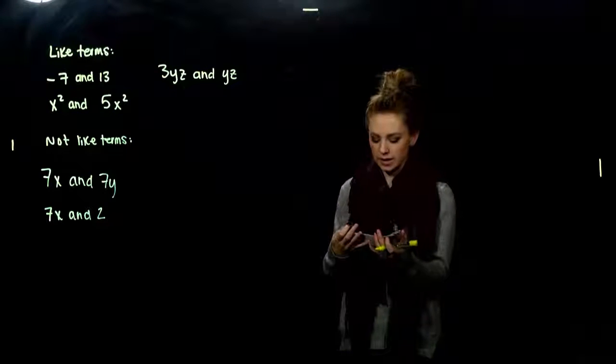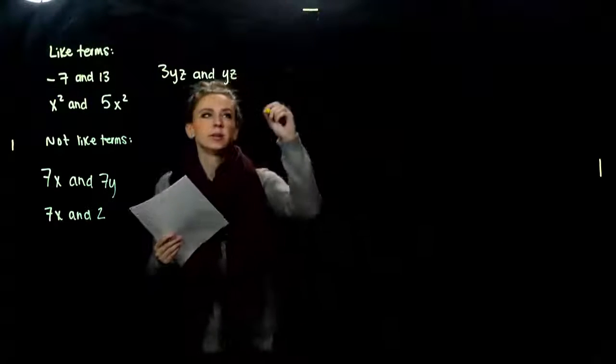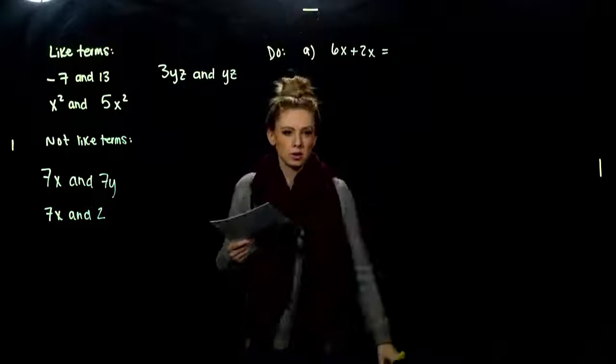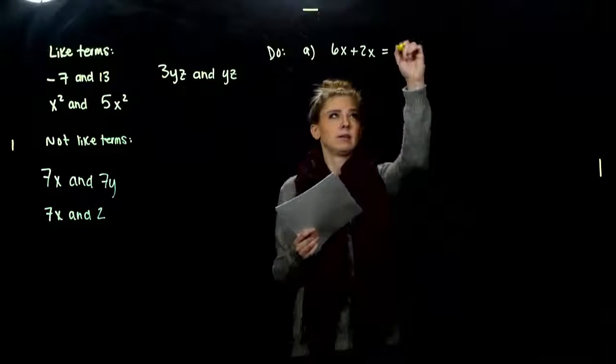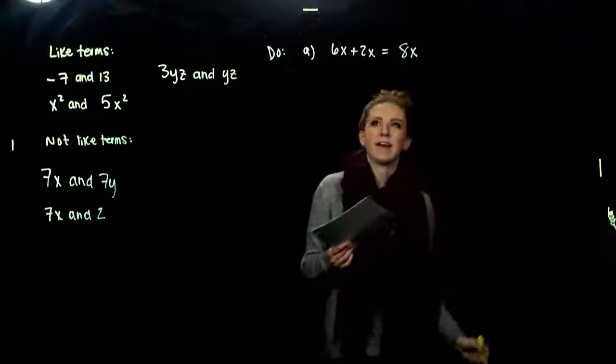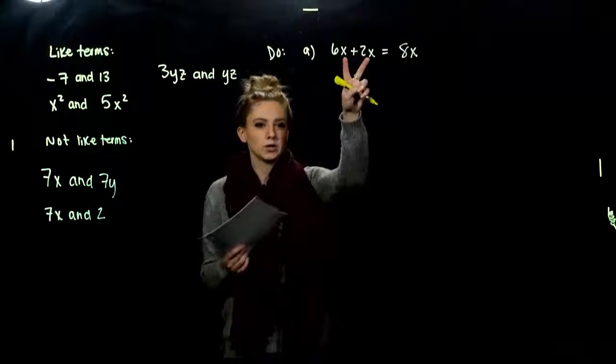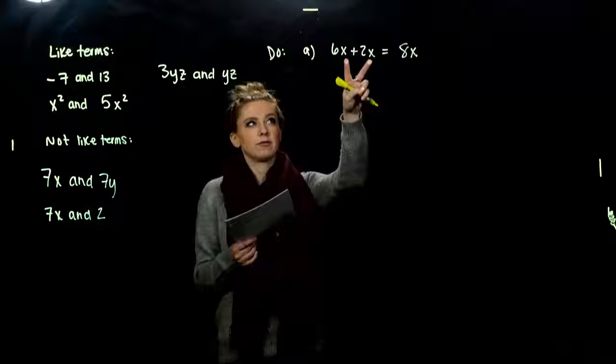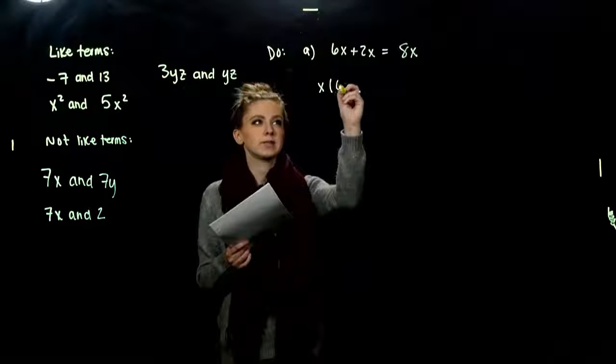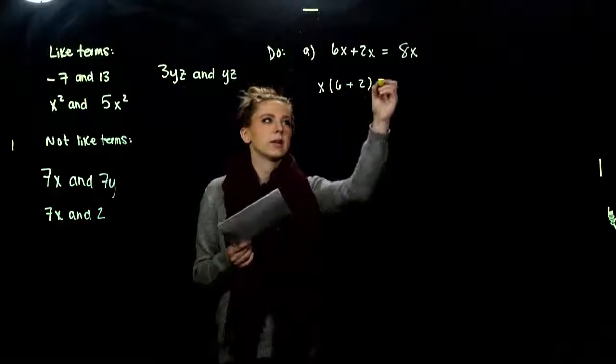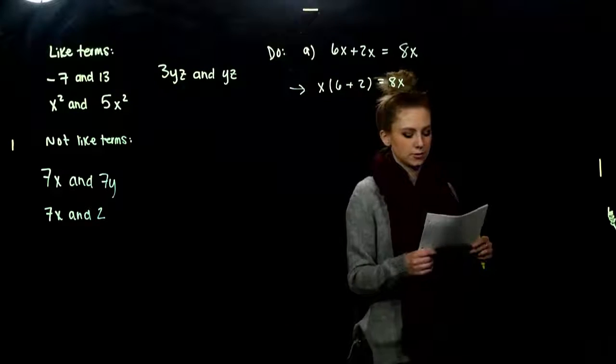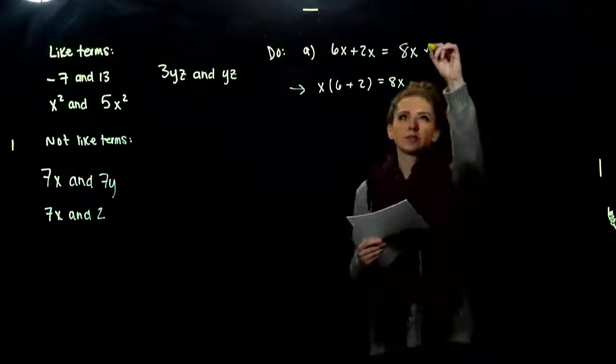The first example of like terms would be like negative seven and thirteen, for example. Both of those are constants. They're of the same kind of number, so we could combine them together. Or anything that matches exactly variable-wise. Each of those are of the same kind of number, x squared, on the back. So I have one factor of x squared and five factors of x squared. So we could combine those together. We could even have more than one variable involved, like 3yz and yz. I could combine those two because, again, they have to match exactly on their butts. They have to match exactly on the back ends.